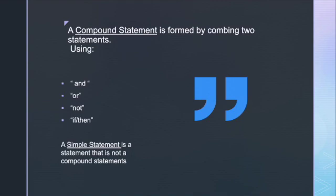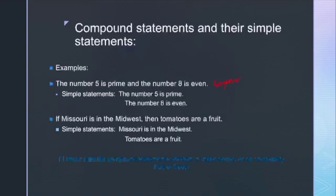A compound statement is formed by combining two statements using and, or, not, or if-then. A simple statement is a statement that's not made out of compound statements. For example, 'the number five is prime and the number eight is even' is a compound statement. Its simple statements are: 'the number five is prime' and 'the number eight is even.'